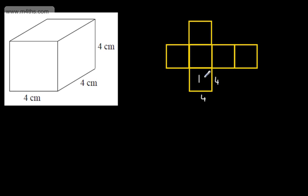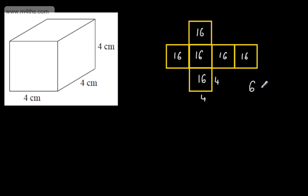So each of these dimensions now is going to be four centimetres, and we're just going to have six of them. So this one is going to be four by four, and all of the others are the same. The area of this one is going to be 16 centimetres squared, and each of the other five faces will also be 16. So if we add all of those up, we've got six lots of 16, and that's going to give me 96 centimetres squared. As it's an area, we give our answer as a squared value.